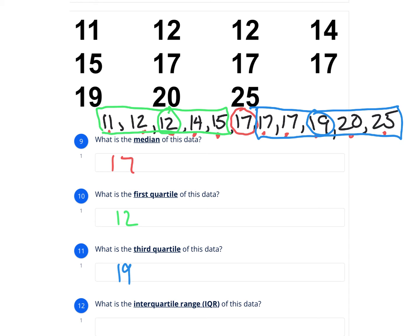And then the last thing that you have to find is something called the interquartile range. That's just a fancy word for finding out how far it is from there to there. So you just subtract those two numbers. So I'm going to subtract 19 minus 12. And I can use my calculator for that. 19 minus 12 is 7. So the interquartile range of this data is 7.